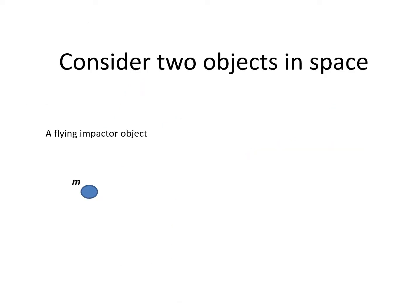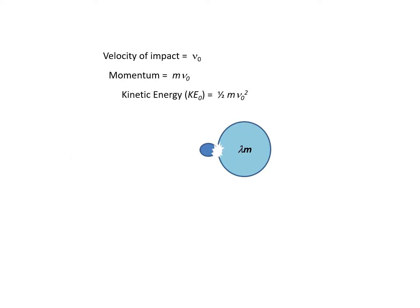Consider two objects in space. The flying impactor object has mass m, and the target which is initially stationary has mass lambda m. So as the impactor moves and collides with the target, it has velocity of impact v0, momentum m v0, and kinetic energy half m v0 squared.